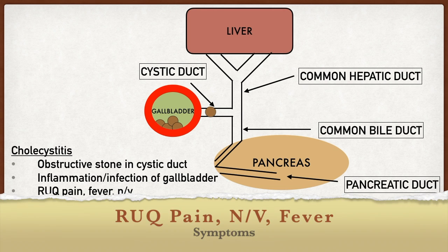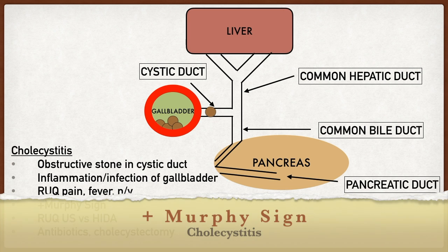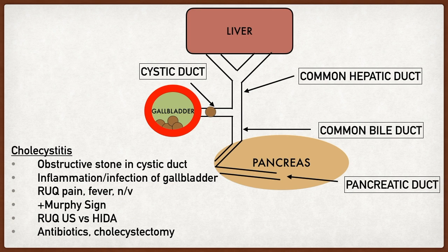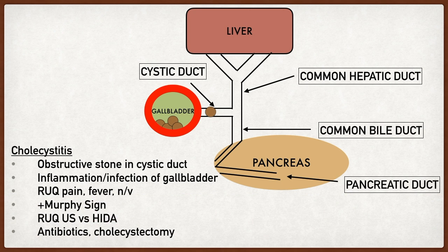Symptoms of acute cholecystitis include right upper quadrant abdominal pain, fevers, and nausea and vomiting. An important physical exam finding is the Murphy sign. To perform it, palpate the inferior border of the liver where the gallbladder sits, then ask the patient to take a deep breath. During inspiration, the diaphragm pushes the liver and gallbladder inferiorly right where you're palpating. If the patient stops breathing due to pain, this is a positive Murphy sign, indicative of acute cholecystitis.